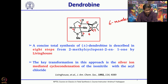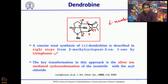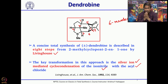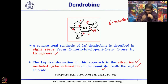Let us start with the simplest and best synthesis so far for dendrobine. This is the synthesis reported by Thomas Livinghouse, who reported it in 8 steps starting from 2-methylcyclopentenone. The key reaction - there are a couple of key reactions - and the best one is the silver ion-mediated cyclocondensation of an isocyanide with an acid chloride, to generate the dihydropyrrolidine ring, the 5-membered pyrrolidine ring.